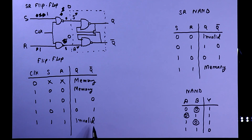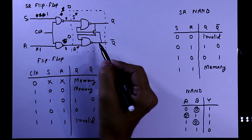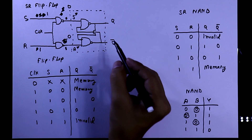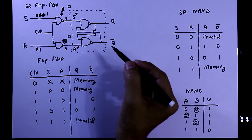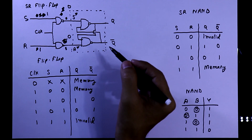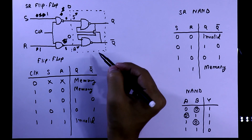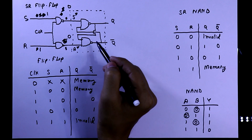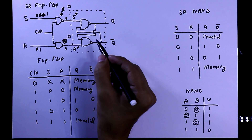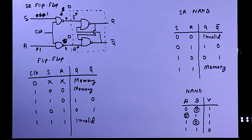To make the one-one input case valid, we have to improve the circuit, and we will discuss this in JK flip flop. In the next video, I will show the practical circuit of this. This is all for today. Thanks for watching.